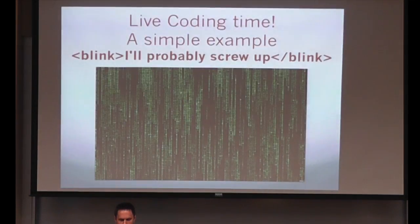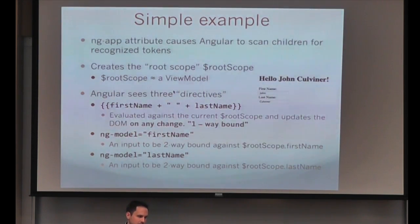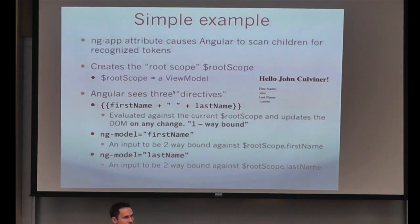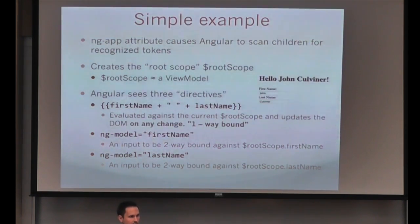So first off, we put ng-app on there — it basically says, 'Hey Angular, scan this document for recognized tokens.' Angular creates something called root scope, which is essentially a view model we can data bind with and interact with. As Angular parses the DOM, it sees three directives. The first is the expression, which is continuously re-evaluated as we interact with the text boxes. We also saw those two ng-models, which are two-way data bound. When I start typing, root scope is essentially equal to an empty object, and because this is JavaScript, you can just assign fields dynamically. So as I type John Kolbener, the expression evaluates — that's essentially what's going on.